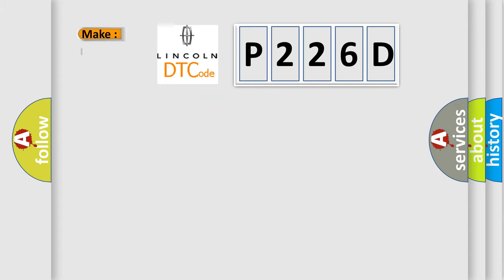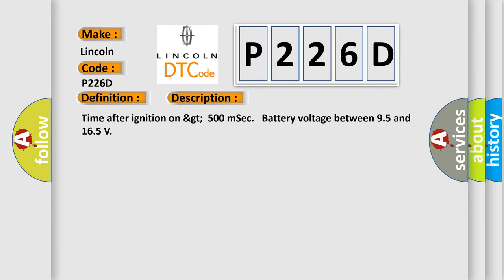So, what does the Diagnostic Trouble Code P226D interpret specifically for Lincoln car manufacturers? The basic definition is NOX sensor 1 bank 1 implausible signal. And now this is a short description of this DTC code: Time after ignition on greater than 500 milliseconds, battery voltage between 9.5 and 16.5 volts.